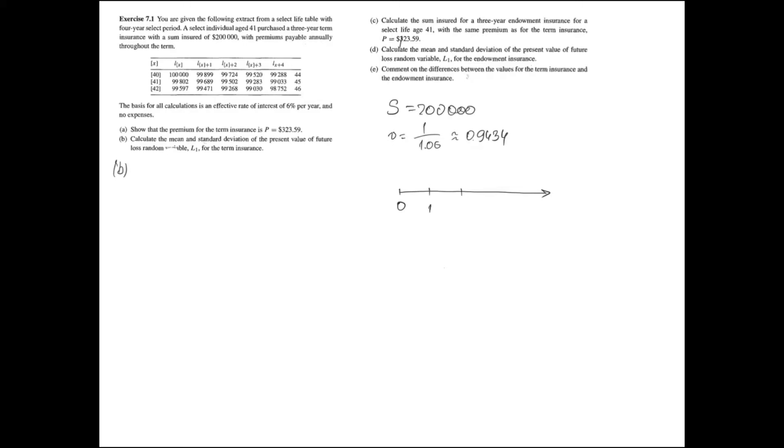For a better understanding, let me draw a timeline. It is feasible to consider the future net loss function L1 at time 1 only if the policyholder has survived this one year.